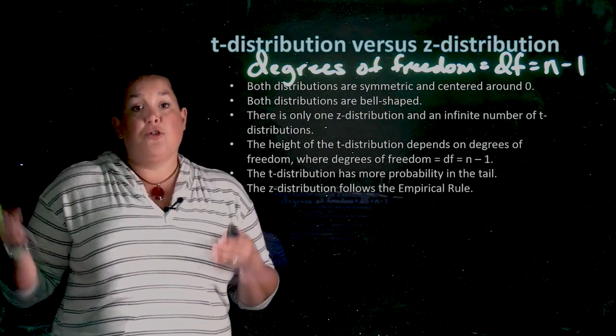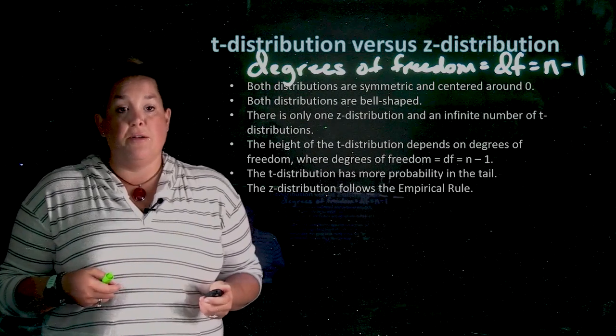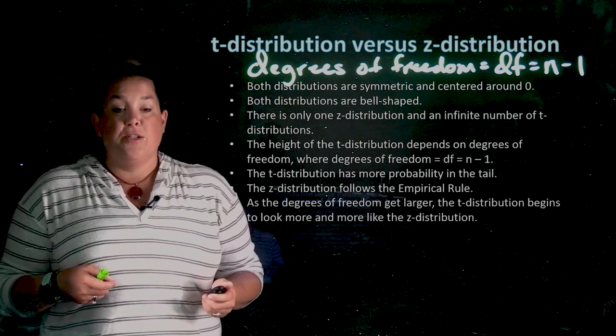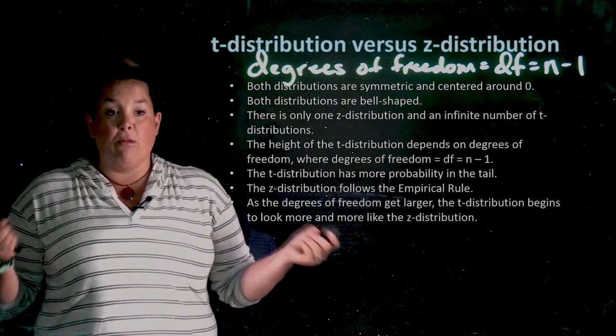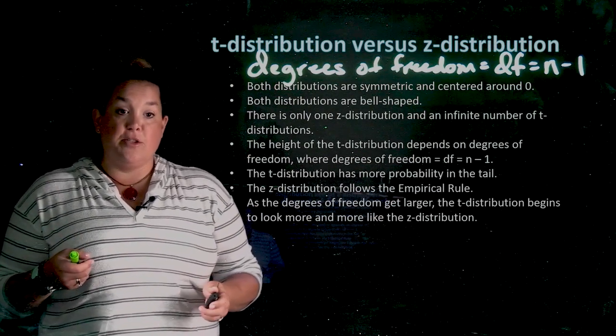And as the t-distribution increases the degrees of freedom, the closer it will be to following that empirical rule as well. So as the degrees of freedom get larger, the t-distribution also begins to look more and more like that z-distribution.